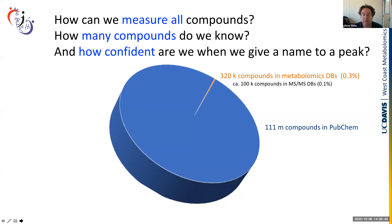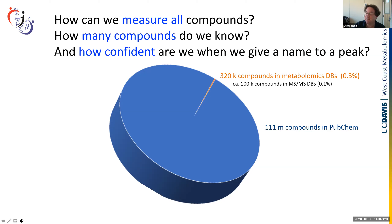There are only 320,000 compounds in all metabolomic databases combined, including HMDB and many others. If we think about mass spec libraries of small molecules, there are only about 100,000 compounds with validated and curated MS/MS data — experimental data including from NIST 20 and other libraries. So most of the compounds we would see in a non-targeted screen are likely to be unknowns. When we give a name to a peak, how confident are we that this name is actually correct?